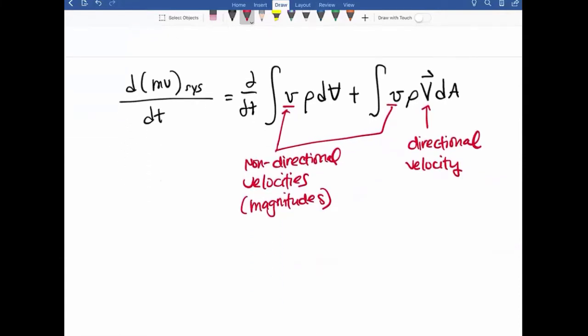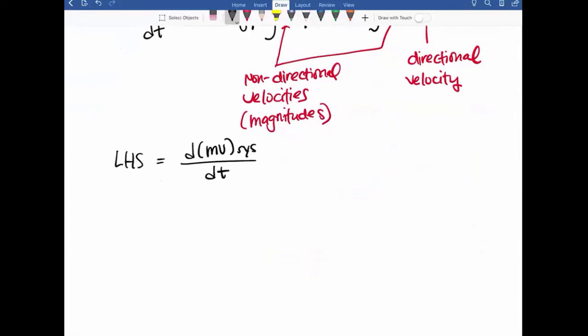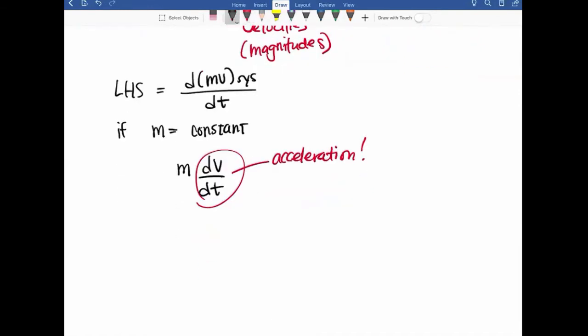So let's look at the left-hand side, which is dmv of the system over dt. If the mass is constant, we can pull it out of our equation. What is this equal to? Is that acceleration? That is acceleration. So this is just the left-hand side of the equation, which is going to be mass multiplied by acceleration.